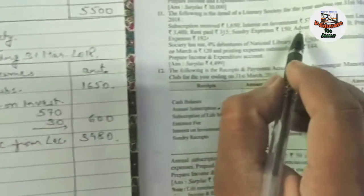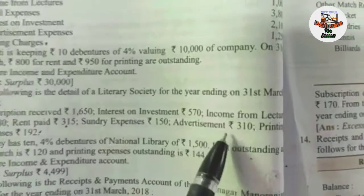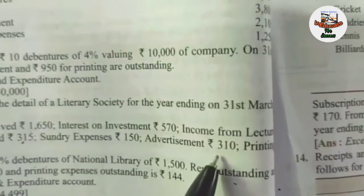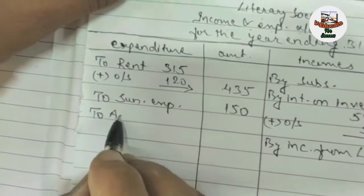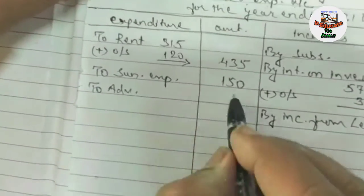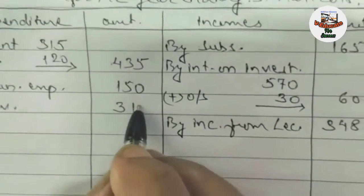Then it is given advertisement expense: ₹310. No adjustment is there for advertisement, so the amount recorded is ₹310.